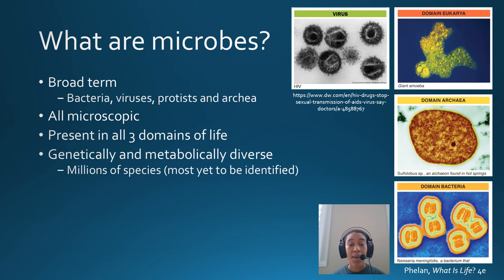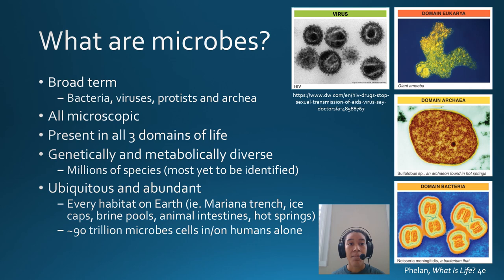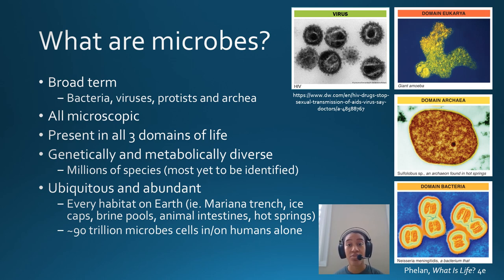Microbes are genetically and metabolically diverse — arguably the most diverse category of life, or non-life, on this planet. There are millions of species that have not even yet been identified. We know they're out there due to genetic analyses where we find RNA and DNA from various species but have never been able to see them. Microbes are ubiquitous; they cover every surface and are in every habitat on earth, including the depths of the Marianas Trench, where there's intense heat, pressure, and lack of light.